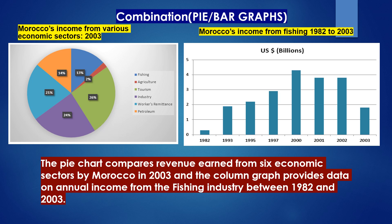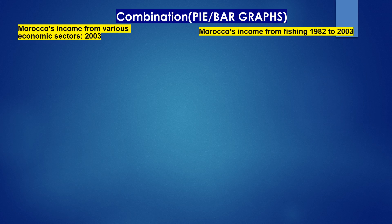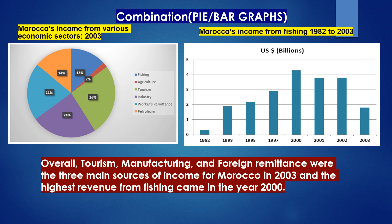Let me present an answer that can help you score a good band. The pie chart compares revenue earned from six economic sectors by Morocco in 2003, and the column graph provides data on annual income from the fishing industry between 1982 to 2003. Overall, tourism, manufacturing, and foreign remittance were the three main sources of income for Morocco in 2003, and the highest revenue from fishing came in the year 2000.